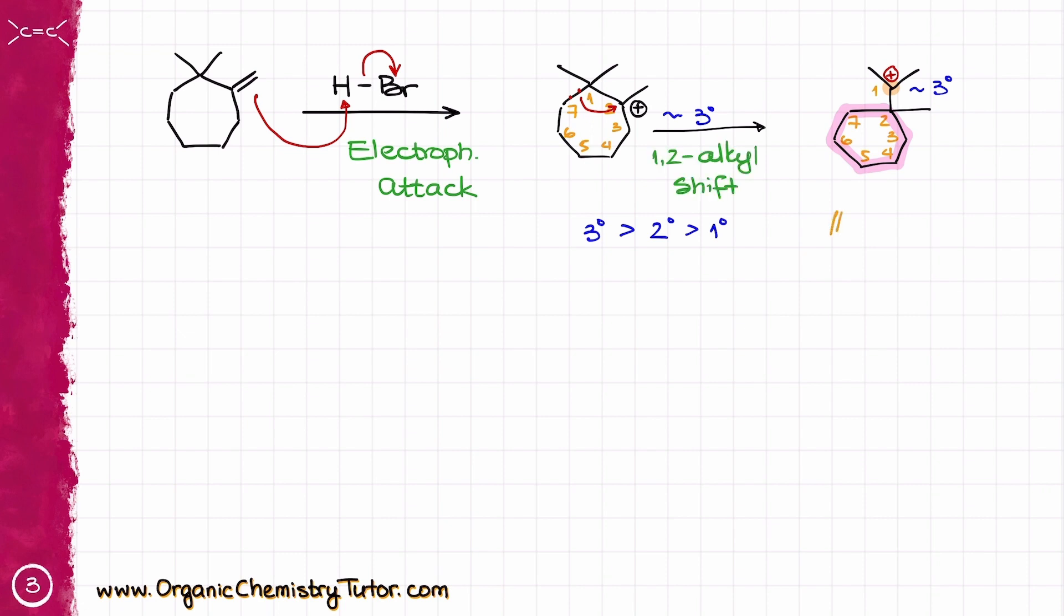Now, let me redraw this molecule a little bit better. I have my 6-membered ring, my carbocation on this side, and everything looks pretty.